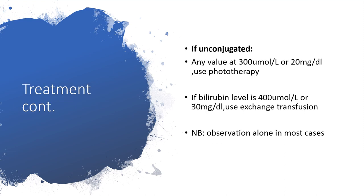In unconjugated hyperbilirubinemia, at a value of 300 micromoles per liter or 20 milligrams per deciliter, use phototherapy to convert insoluble bilirubin to soluble bilirubin. If the bilirubin level is 400 micromoles per liter or greater, or 30 milligrams per deciliter, then we need exchange blood transfusion. In most cases, observation alone will be appropriate.